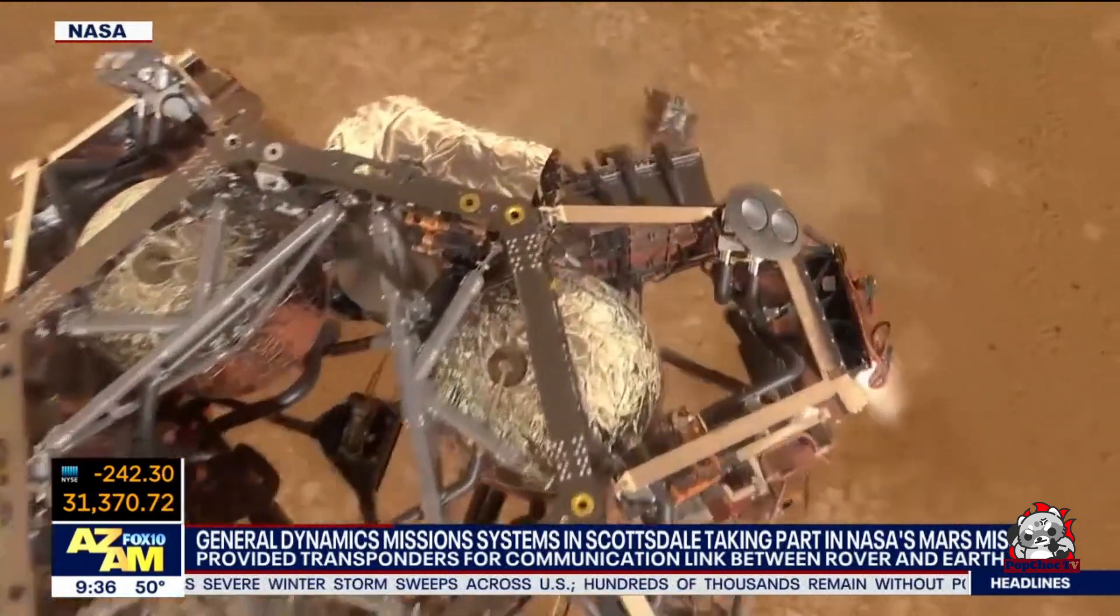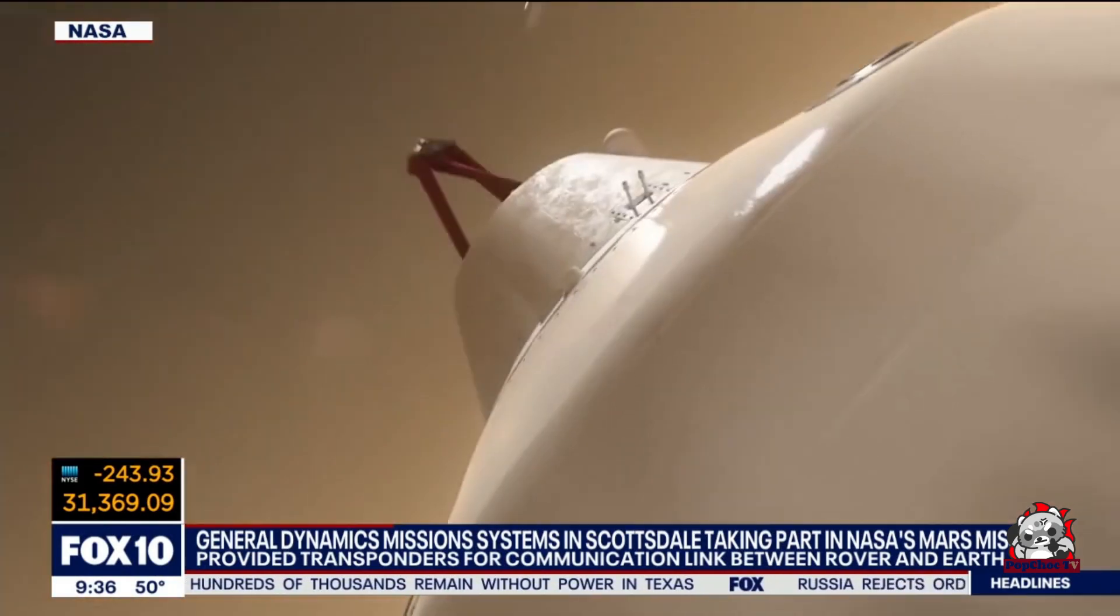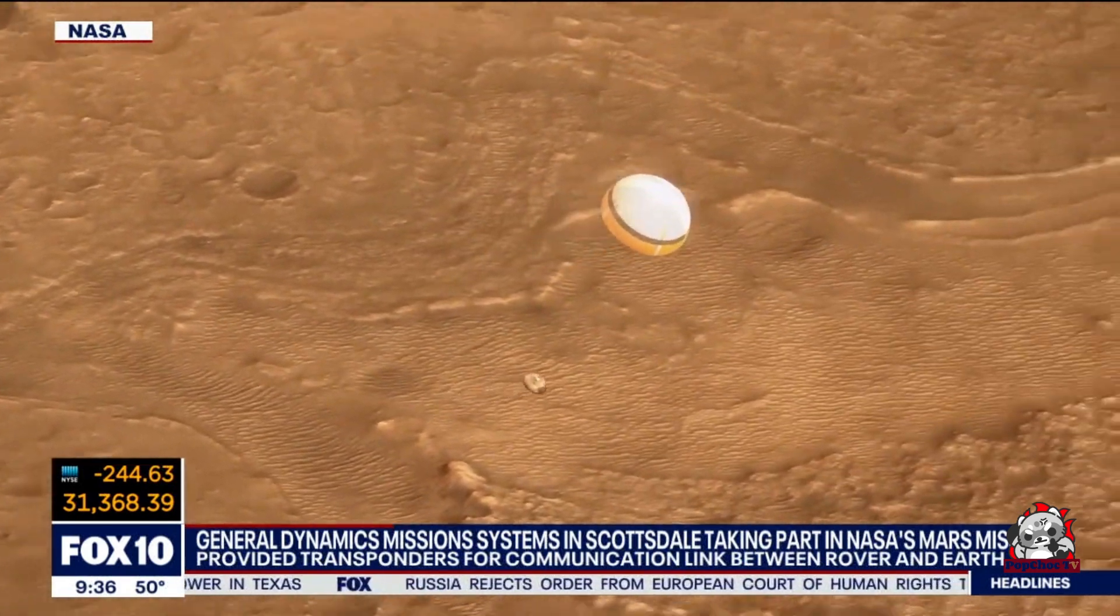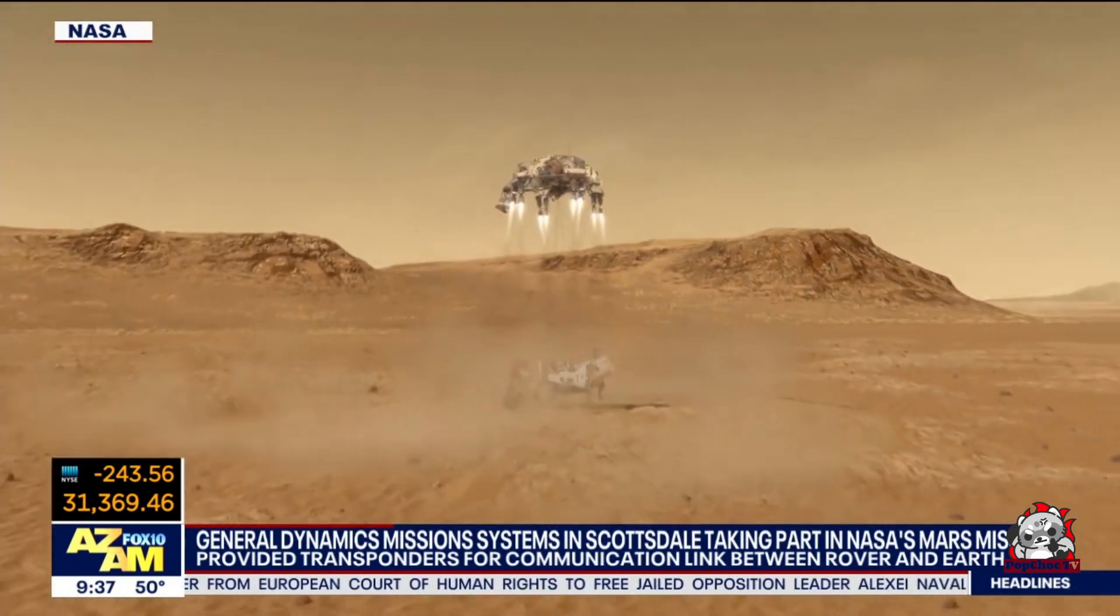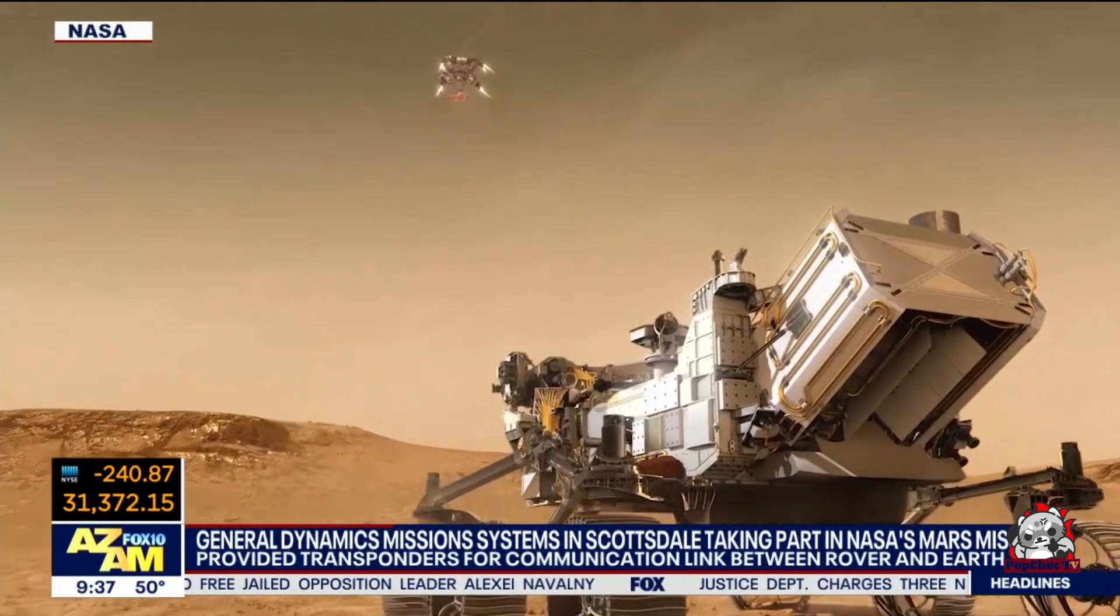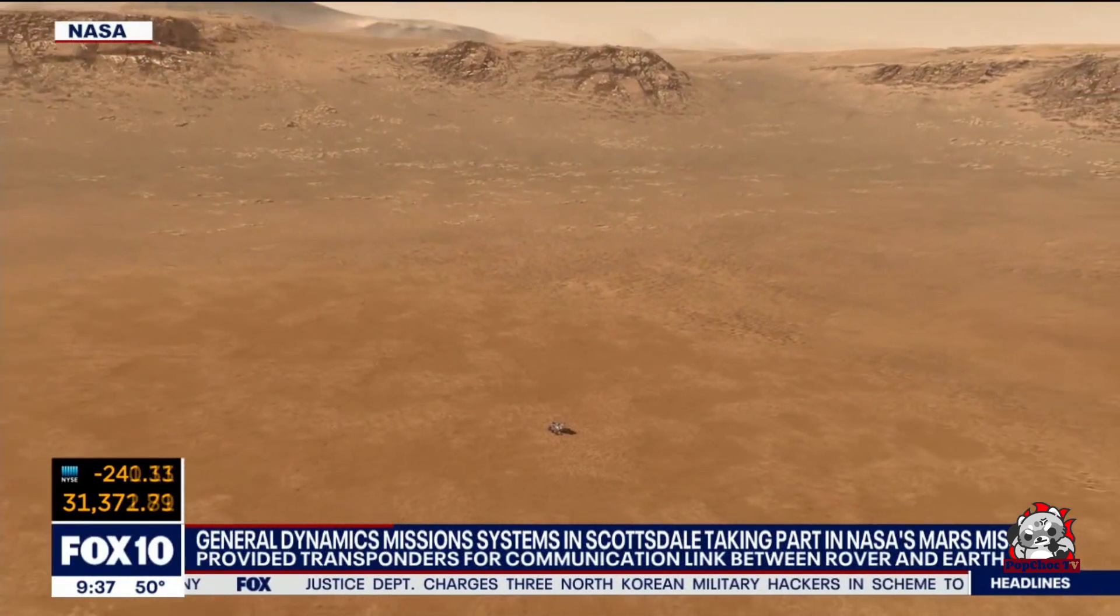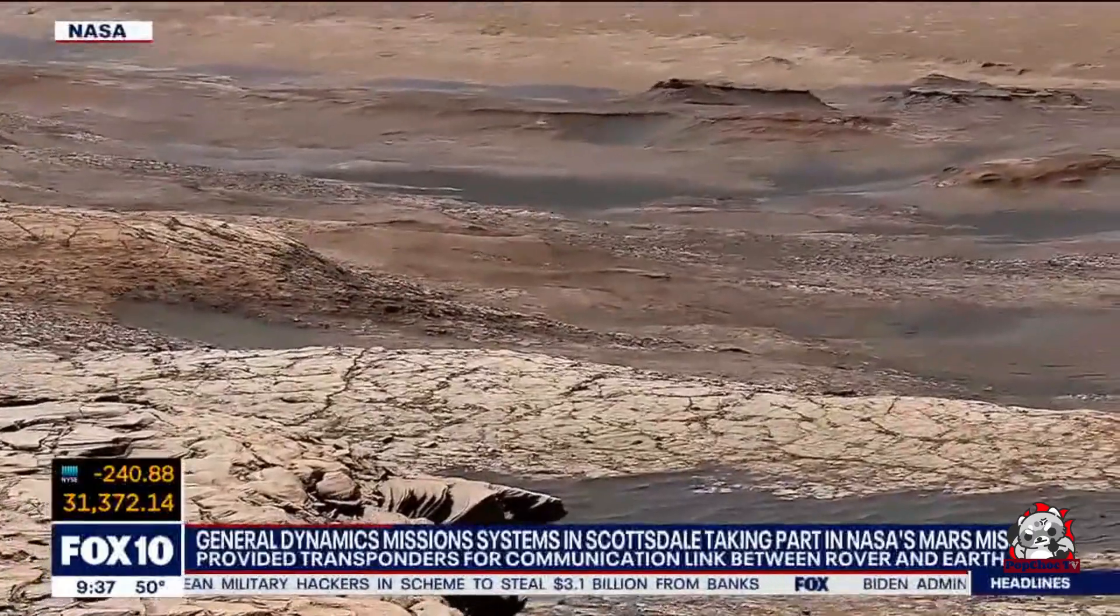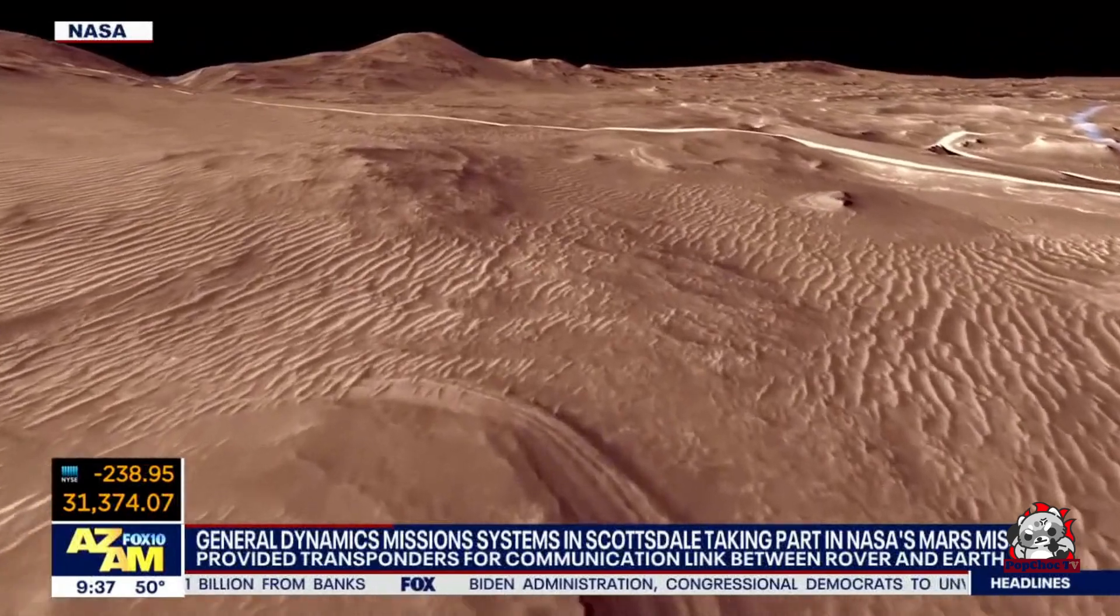Landing a rover on Mars is an incredibly challenging task due to the planet's thin atmosphere, which makes it difficult to slow down the spacecraft. To overcome this, NASA developed a sophisticated sky crane system that gently lowered Perseverance onto the surface. The rover is equipped with advanced instruments, including a drill for collecting samples and a mini-helicopter called Ingenuity. These samples will be returned to Earth during the Mars Sample Return mission, giving scientists an unprecedented opportunity to study Martian geology and search for signs of past life.